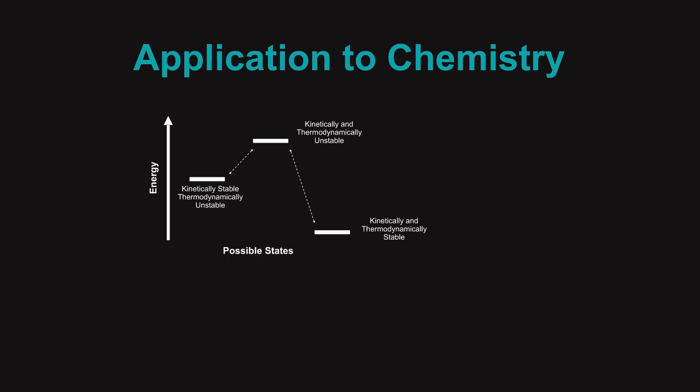Once you know about these transitions, you can talk about the stability of the different states. On the leftmost side of the slide, we have a kinetically stable but thermodynamically unstable state. The reason for this is because to exit this state, it has to go to a higher energy state, which is kinetically and thermodynamically unstable, before falling into the lowest energy state, which is kinetically and thermodynamically stable. If we had a transition between the leftmost and rightmost states, then the leftmost state would no longer be kinetically stable because there would be no uphill barrier preventing it from transitioning.